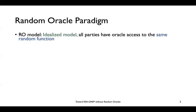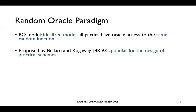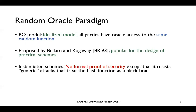One of the models in which we investigate the security of public key encryption schemes is called the random oracle model. In this random oracle model, which is an idealized model, all parties have access to the same random function. This model was proposed by Bellare and Rogaway in 1993 and is a very popular model for designing practical encryption schemes. One important thing to note is that schemes designed in the random oracle model have no formal security proof except that they resist generic attacks when we treat hash functions as a black box.